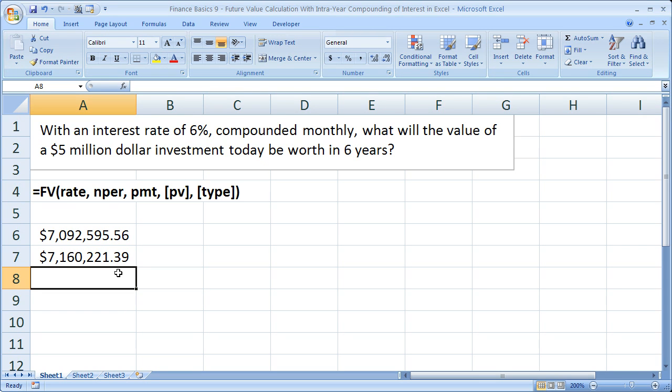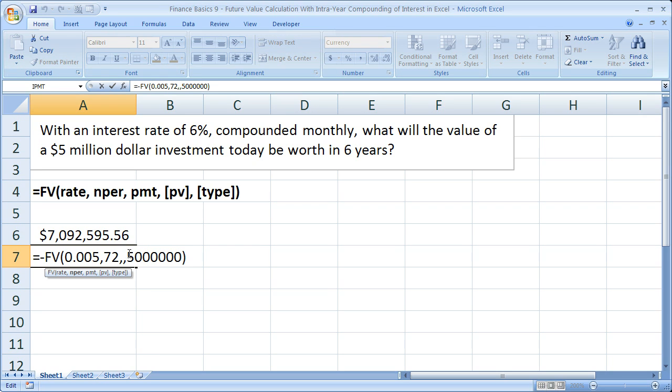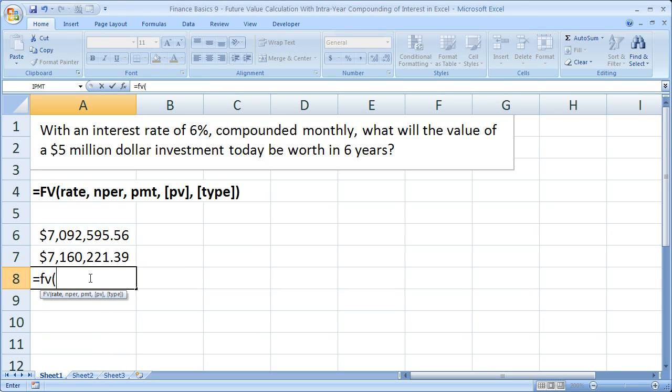Now really quickly, I'll show you how to do all that math in the function instead of outside the function. So equals FV, open parentheses, regular interest rate 0.06 divided by 12, comma, number of periods 6 times 12, comma, no payment so comma, present value 5 million. Close parentheses, put the negative sign in front of the future value function, and hit enter. Just like that. We avoided having to do any math outside of the cell.